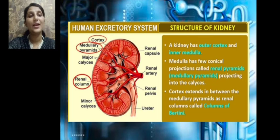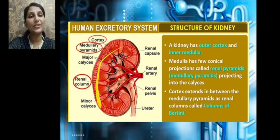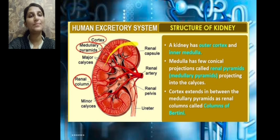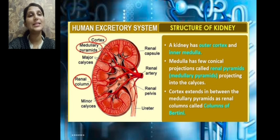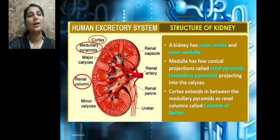So far we have learned about the hilum, the calyces with their major and minor divisions, the outer cortex, and the inner medulla. The medulla has many medullary pyramids projecting towards the calyces, and the cortical region projects inward between the renal pyramids, forming the columns of Bertin.